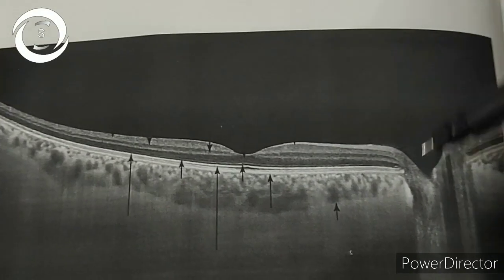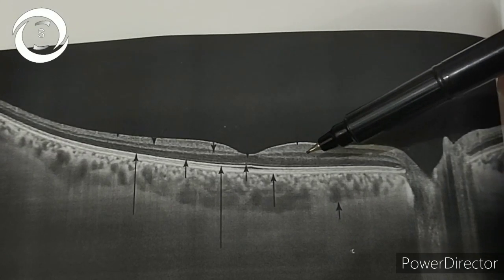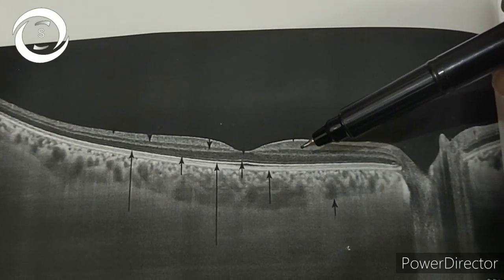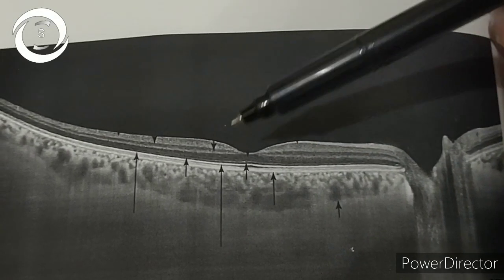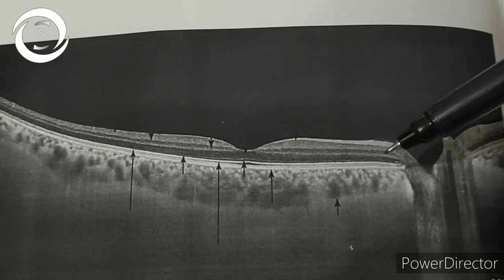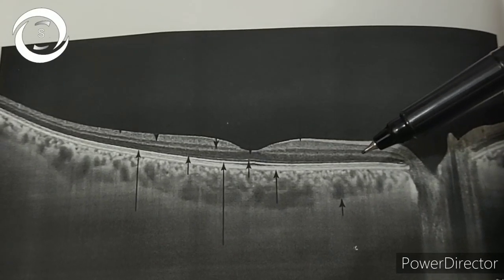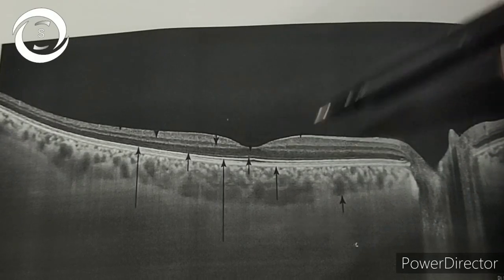Now in the inner retinal layers, the hypo-reflective areas are the inner and outer nuclear layers, whereas the hyper-reflective areas are axons and dendrites of plexiform layers. You should know that.